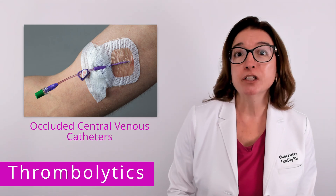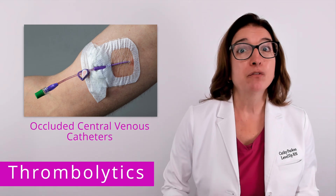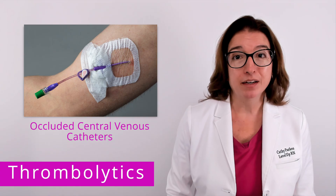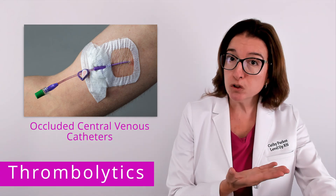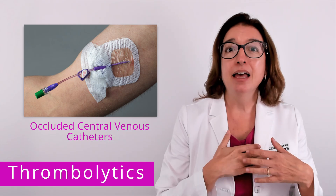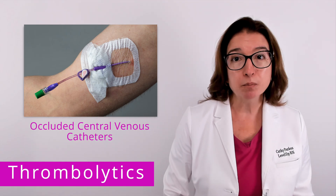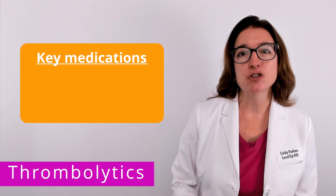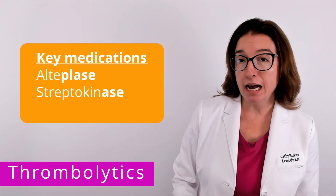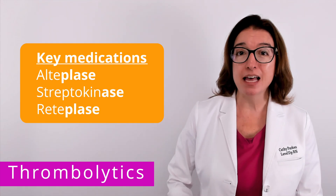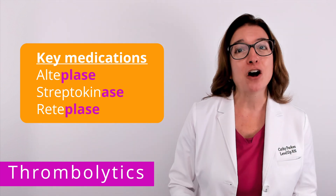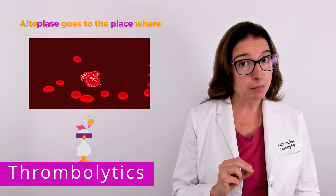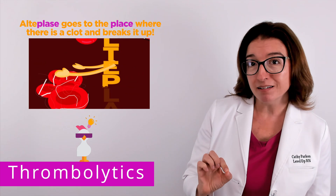Thrombolytics are also used to treat occluded central venous catheters. If you are working in the hospital and taking care of patients with PICC lines, it is inevitable that at some point you will try to do a blood draw and won't be able to because it is clotted. In that situation, you'll need to use a thrombolytic agent such as alteplase to break up the clot and restore patency of the line. Key medications in this drug class include alteplase, streptokinase, and reteplase. You'll notice that all of these medications end in -plase or -ase. Our cool chicken hint to help you remember these medications is to think: alteplase goes to the place where there's a blood clot and breaks it up.